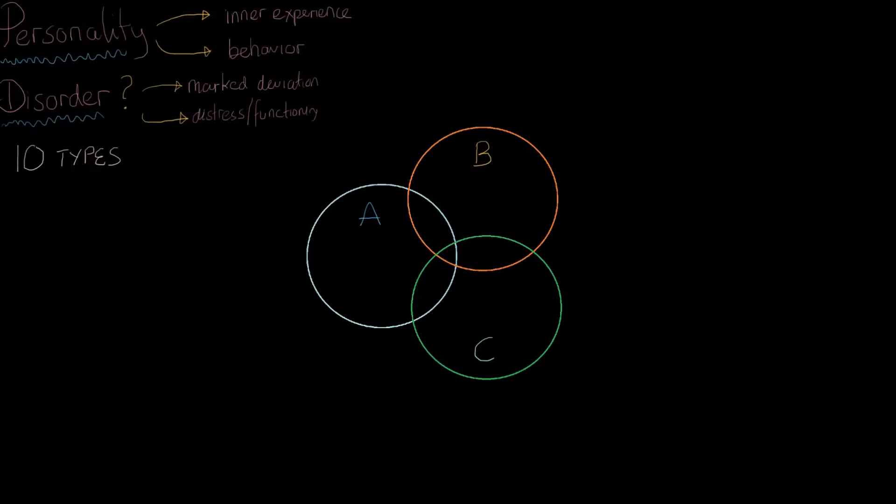As a general overview, the personality disorders in cluster A are often defined as being odd or eccentric. Those in B are often labeled as being dramatic, emotional, or erratic. And finally, in cluster C, these personality disorders are often described as encompassing anxiety and fearfulness features.